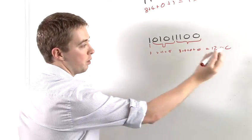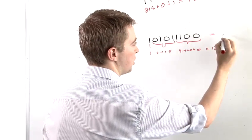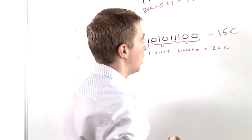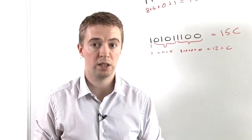So we have 1, 5 and C. So in hexadecimal, this number is represented by 1, 5, C. And that is how to convert a binary number to a hexadecimal number.